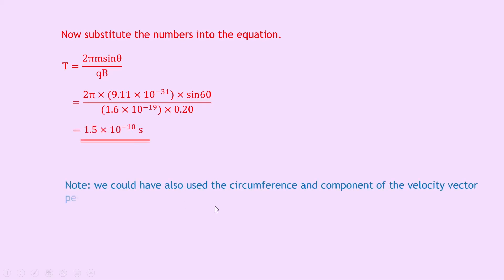Note that you could also have used the circumference and the component of velocity perpendicular to the magnetic field: T equals 2 pi R divided by V sine theta, which is a form of speed-distance-time where time equals distance over speed, with distance being the circumference and speed being the perpendicular velocity component. Using this with the radius from Part A gives the same answer of 1.5 times 10 to the minus 10 seconds.